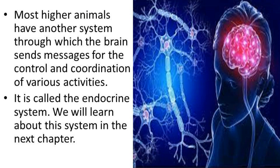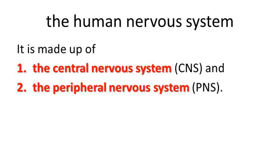This other system is called the endocrine system. It is called the endocrine system because it involves inside processes — internal processes. We will learn about this system in the next chapter.